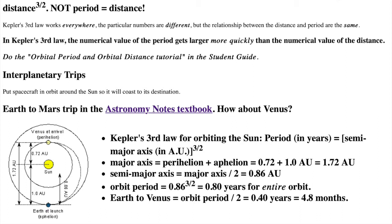Recall from the History and Gravity chapters that in Kepler's third law, the numerical value of the period gets larger more quickly than the numerical value of the distance. For example, an orbit twice as big as another will have an orbital period more than twice as long. That's because not only is the orbit circumference twice as large, the orbit speed for the larger orbit is slower than for the smaller orbit.